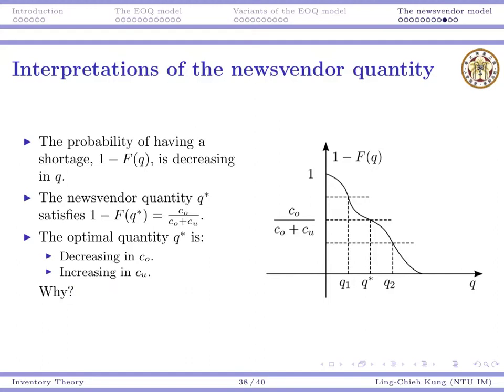Suppose co becomes larger. In that case, your ratio will become closer to 1. Your ratio will go up and your quantity will become smaller. Or if cu is increasing, this ratio will go down and you will order more.